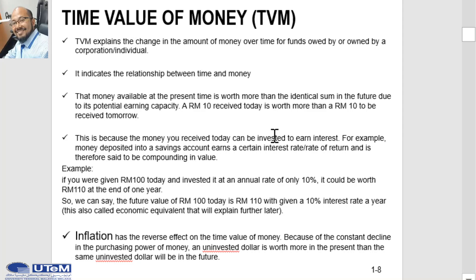So the time value of money explains the change in the amount of money over time for funds owned by a corporation or individual. It indicates the relationship between time and money — that money available at the present time is worth more than the identical sum in the future due to its potential earning capacity. A 10 ringgit received today is worth more than 10 ringgit to be received tomorrow, because the money you receive today can be invested to earn interest.